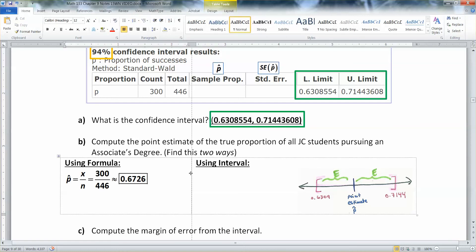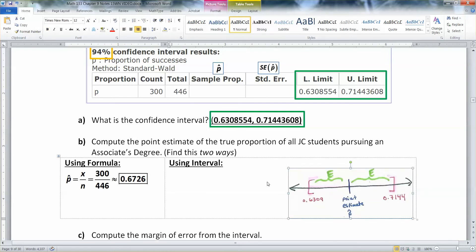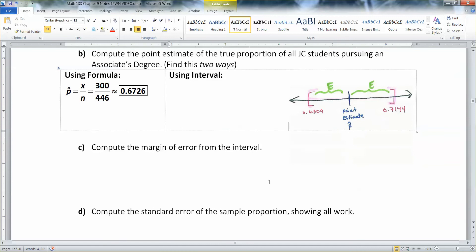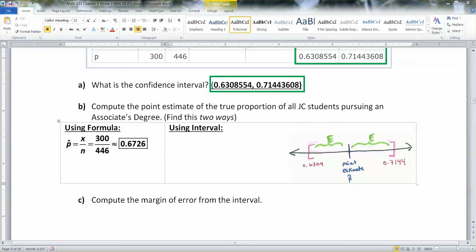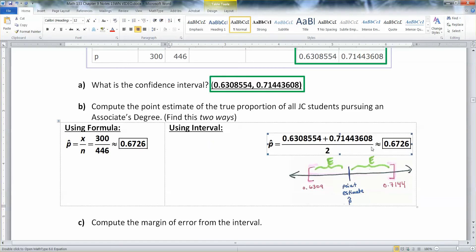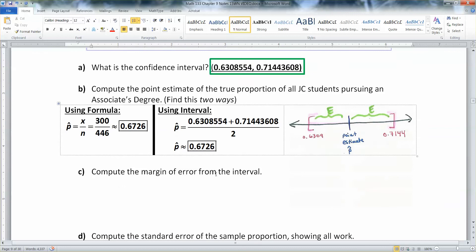Now how would we use the interval to come up with the same thing? Well, remember that the point estimate is the center of the interval, and I drew a lovely picture here that we're going to need a little bit later. So the center of the interval you can find by adding up the two edges and dividing by 2. So we just need to take the two numbers on the edges, which is 0.7144 and 0.6308554, add them up and divide by 2.